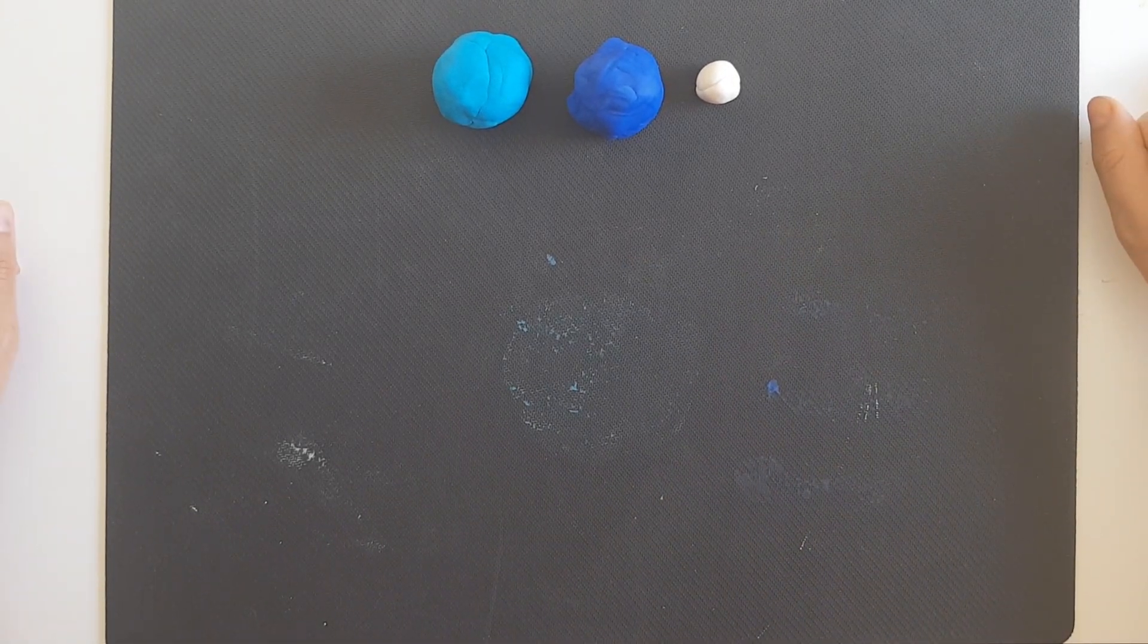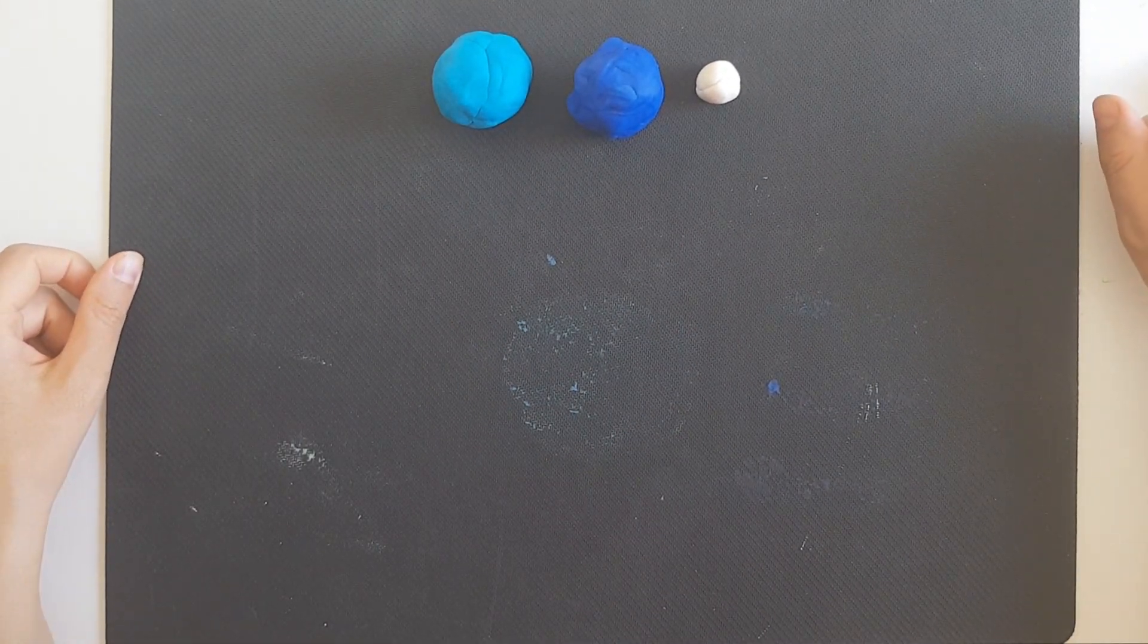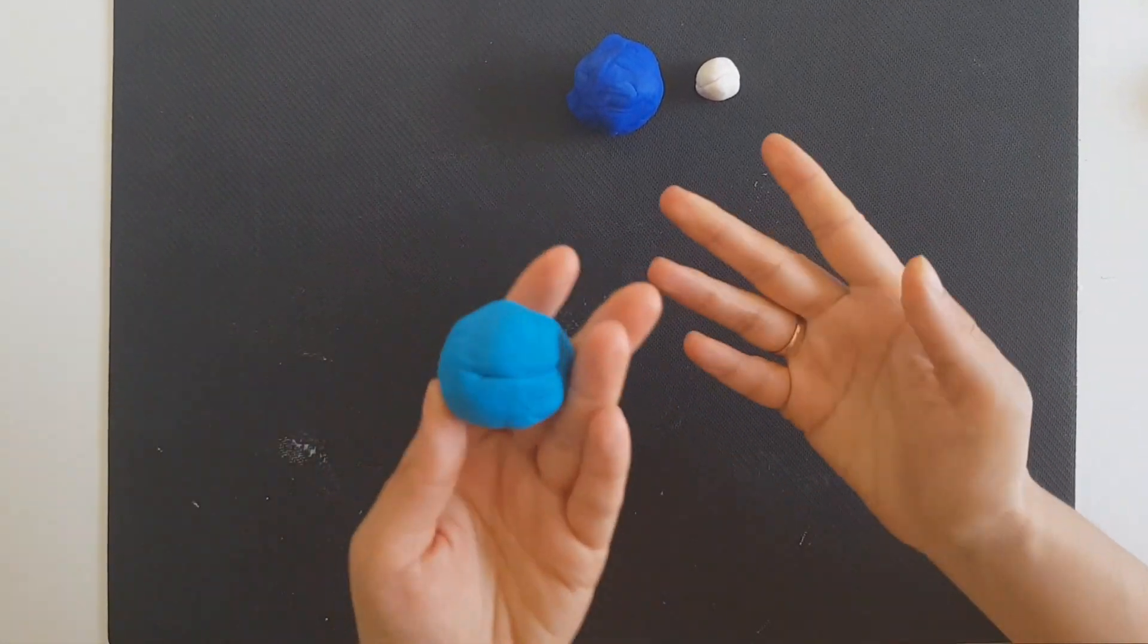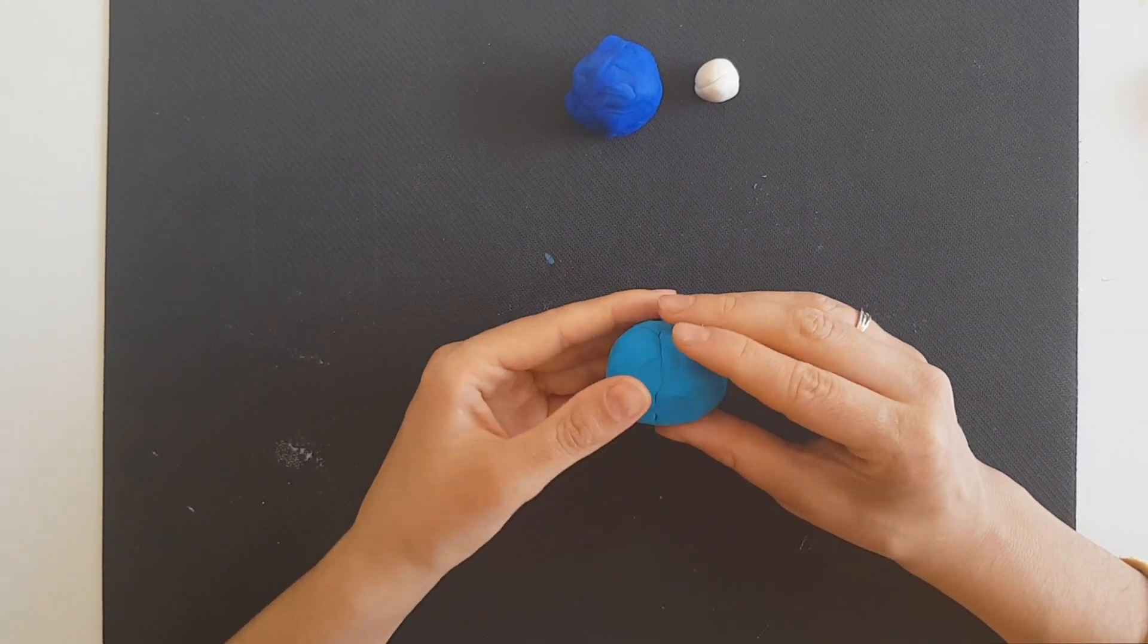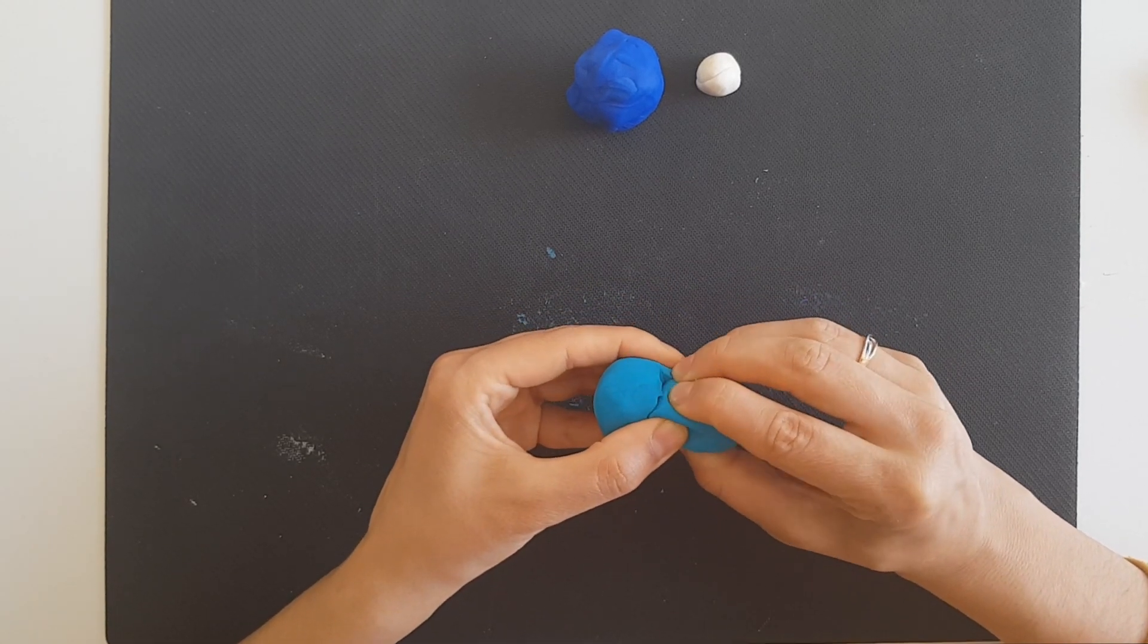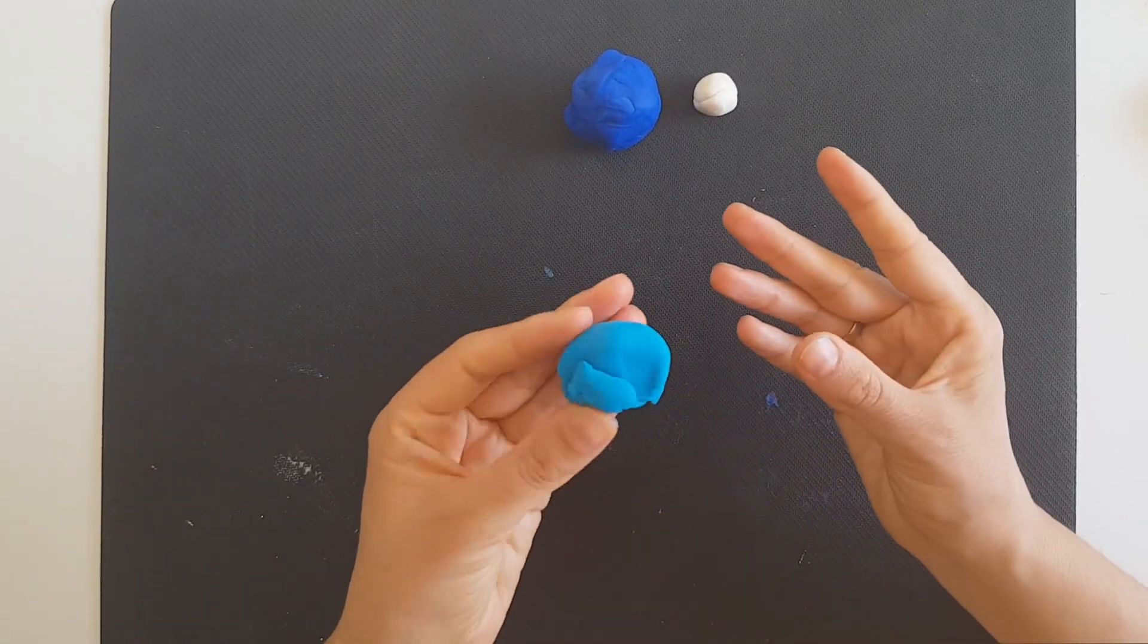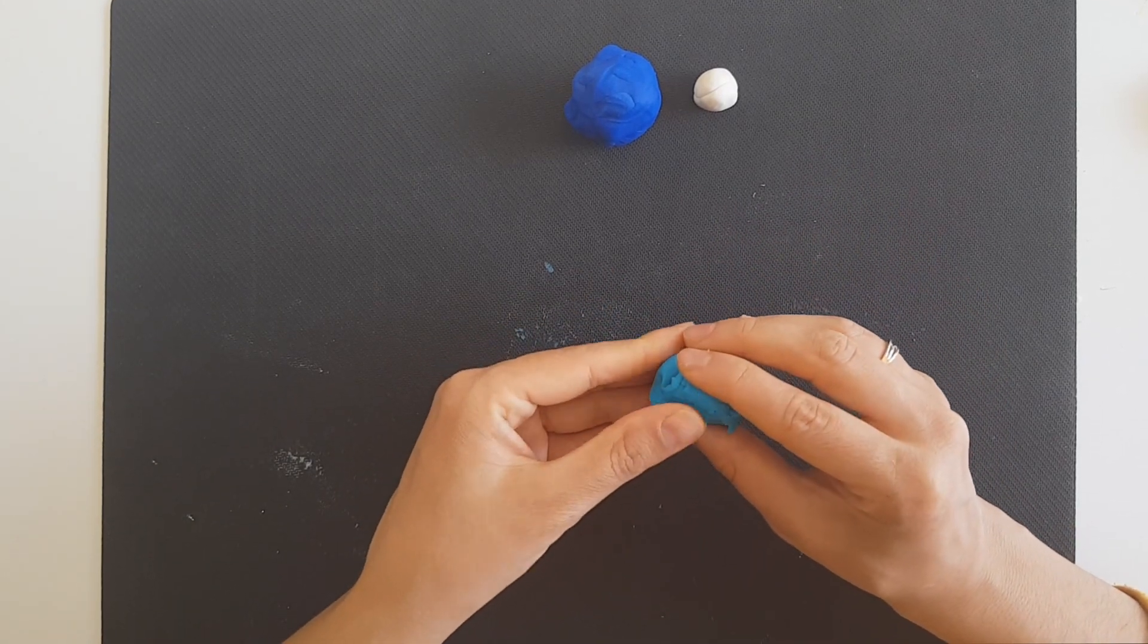I will use these colors that you can see here, but of course you can work with any colors you want. So let's first start with the body. I will divide this piece that I have here in two pieces, and that one I will divide it in two pieces again.